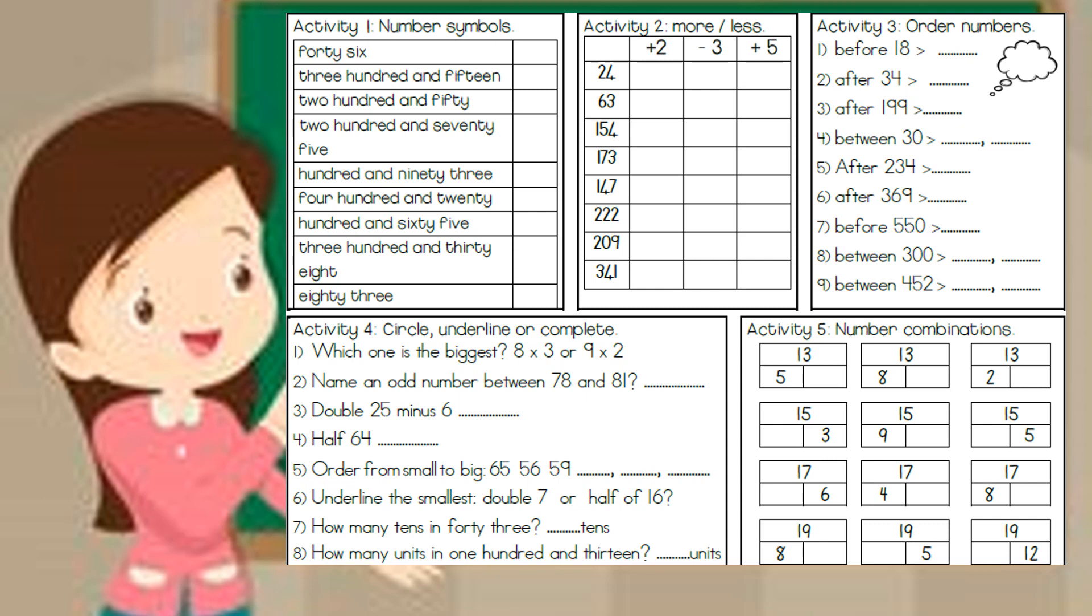Now if you want to double 25. Rename it into 20 and 5. Double the 20. Double the 5. Put together again. And then don't forget. You have to minus the 6 there. Half of 64.